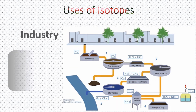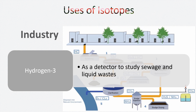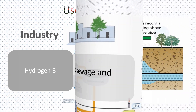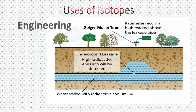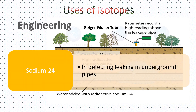In industry, hydrogen-3 is used as a detector to study sewage and liquid waste. In engineering, sodium-24 is used in detecting leaks in underground pipes.